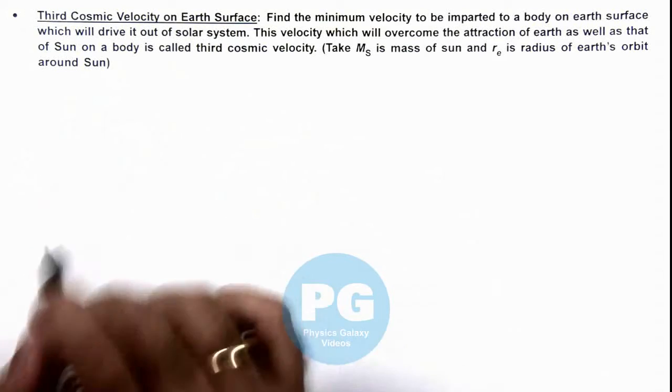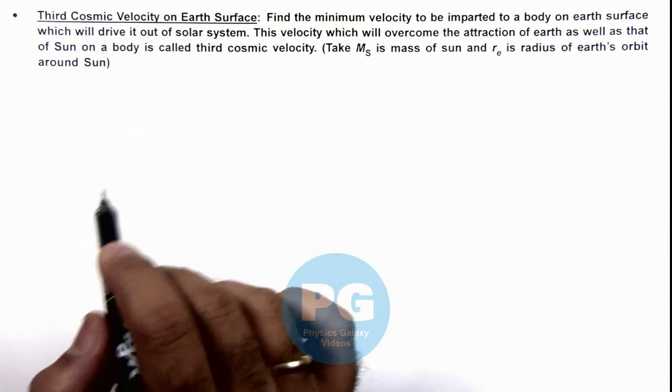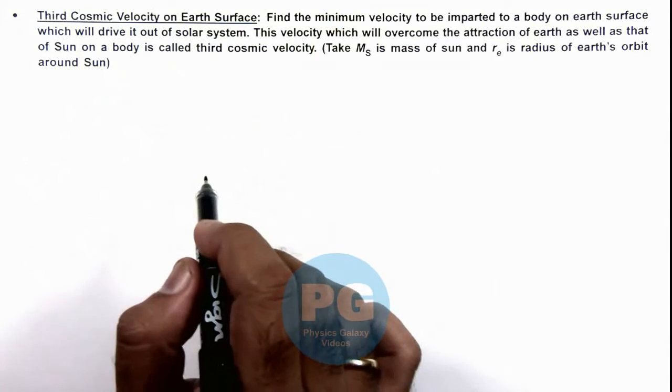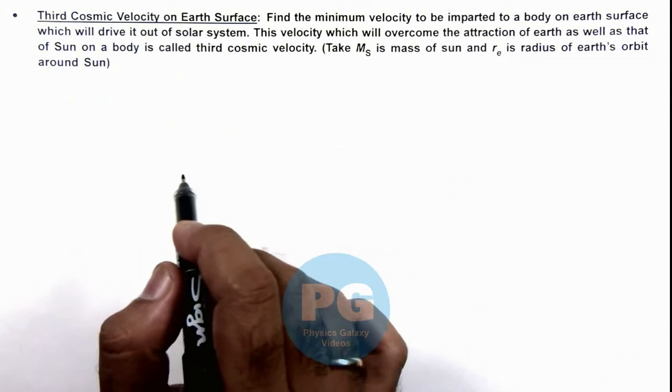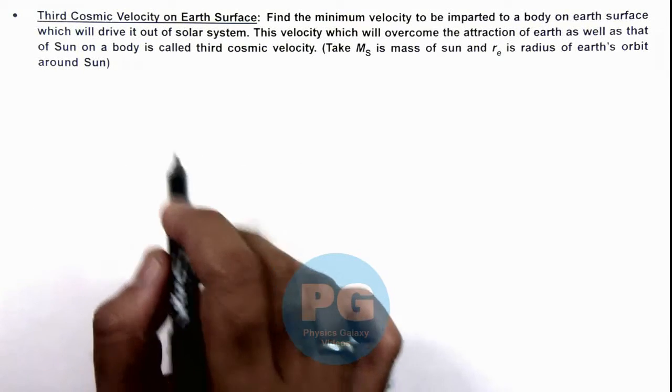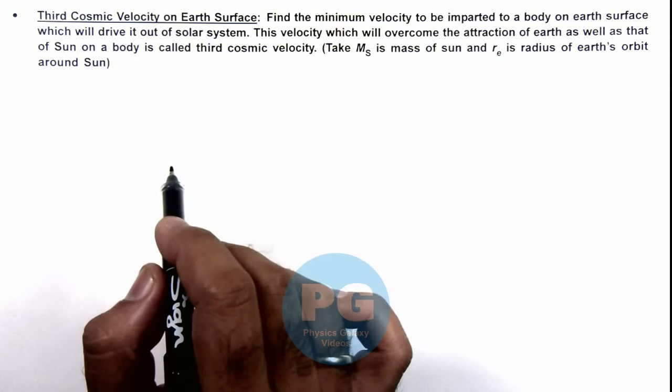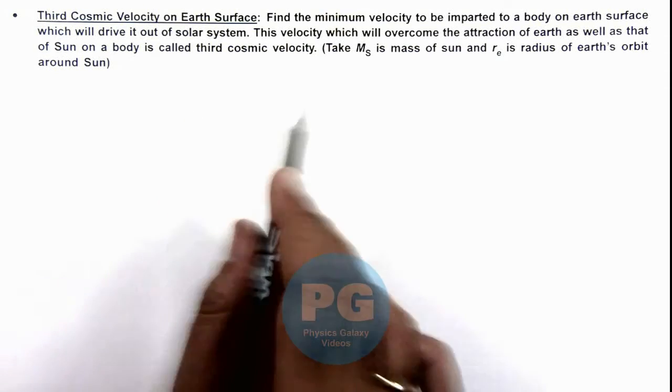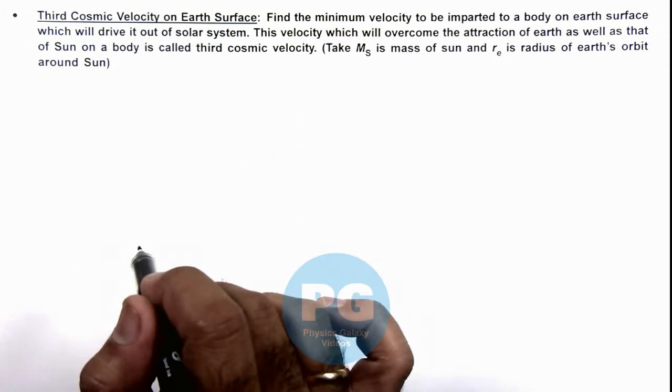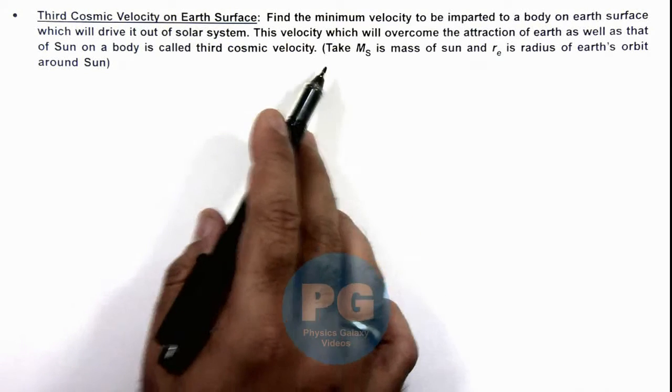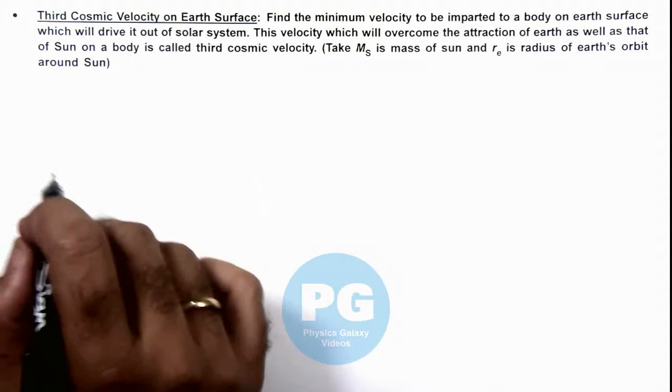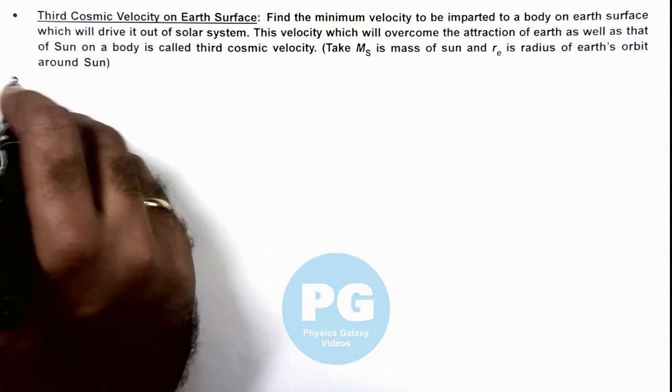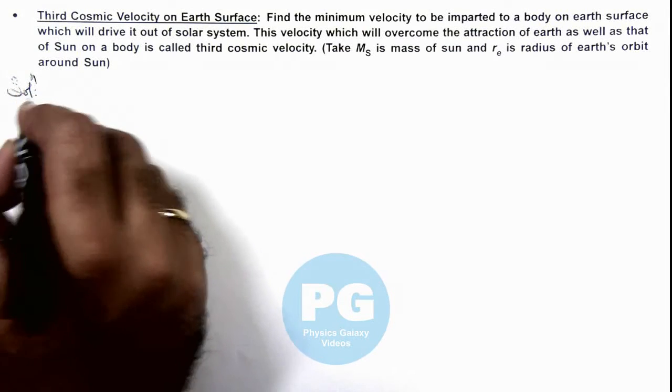Here in our concept videos we already discussed about first and second cosmic velocities, which are the orbital speed of a body around Earth surface close to it, and second cosmic velocity is same as escape velocity. We are given with the mass of Sun and radius of Earth's orbit, so here to calculate this we'll make use of some facts.